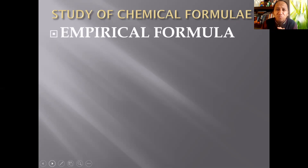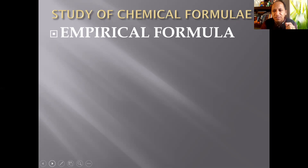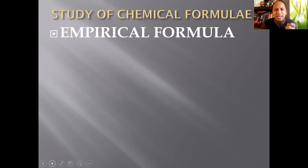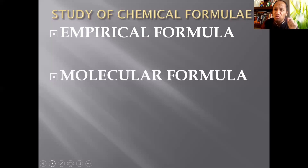Let's get started with the empirical formula. The empirical formula is basically a formula that contains elements together, but these elements are represented in the smallest ratio of atoms present in a compound. If you have a really big formula number, you can determine the empirical formula first, and from the empirical formula you can then determine the molecular formula.